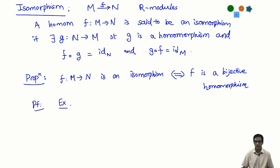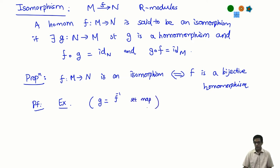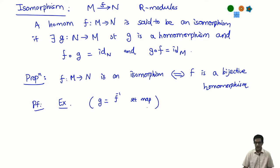I am going to leave the checking as an exercise. Recall: if I have a bijection between any two sets, then I have an inverse set map going in the opposite direction. It is very easy to check that because F is a homomorphism, the inverse map will also acquire the same properties of a homomorphism. So isomorphism is nothing but a bijective map of sets which is also a homomorphism.